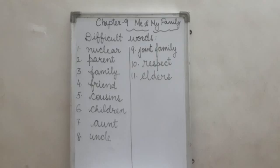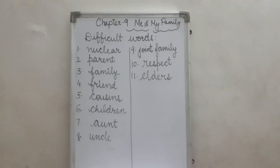Number 5, cousins. C-O-U-S-I-N-S. Cousins. Number 6, children. C-H-I-L-D-R-E-N. Children.